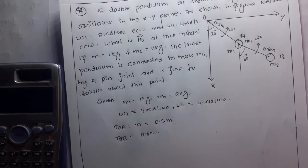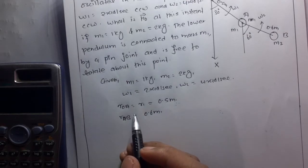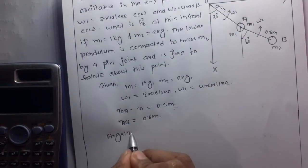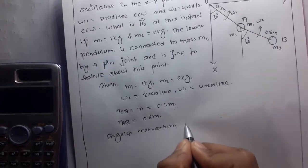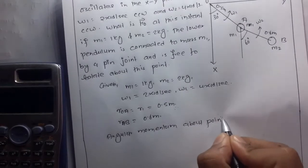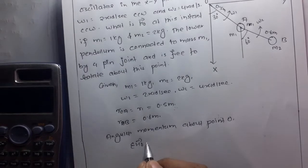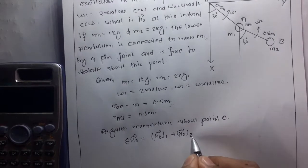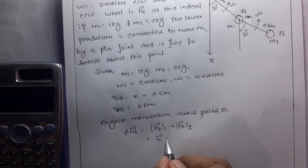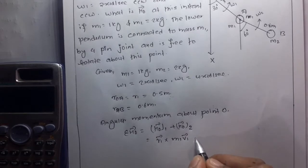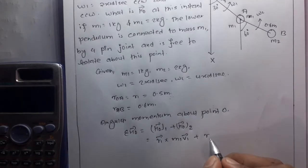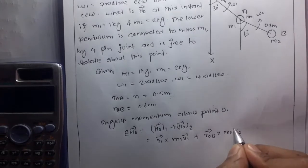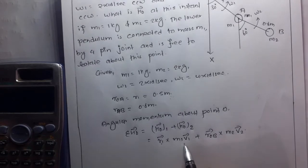We need to find the angular momentum about point O. The total angular momentum H_0 is given by H_0 = H_0_1 + H_0_2, where H_0_1 equals r1 cross m1*v1 plus r_OB cross m2*v2. We need to find r1, v1, r_OB, and v2.